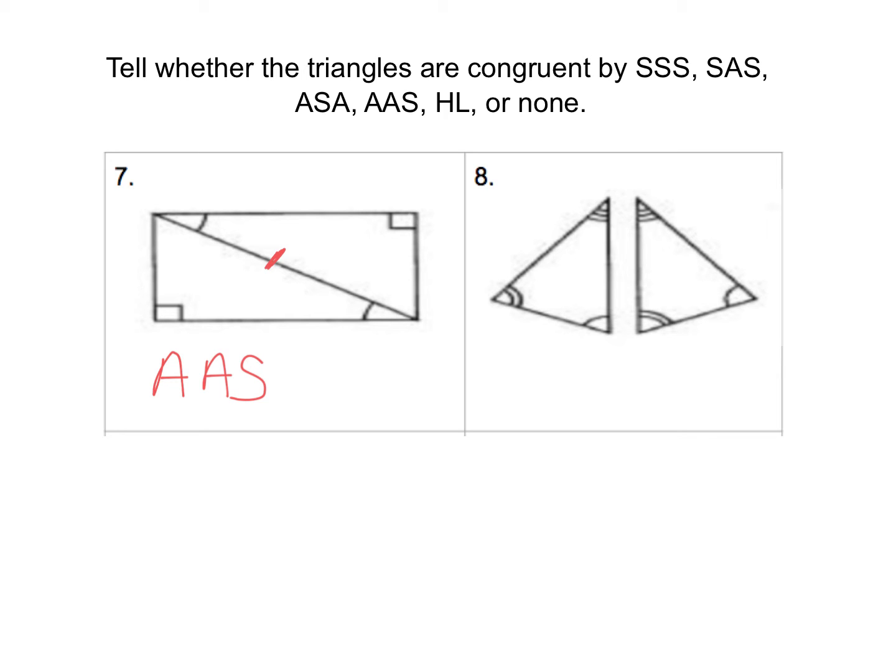On question 8 here, we have three pairs of angles in the triangles congruent. We don't have any shared sides or anything that I can add for markings, so all I have is AAA. But angle-angle-angle does not work to prove that two triangles are congruent. Therefore, these are not congruent and you can type in the word none.